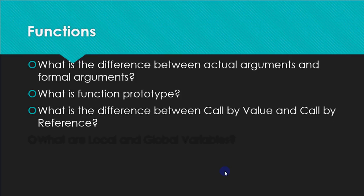A very important question is: what is the difference between call by value and call by reference? This is important for VIVA in year 12 and will remain important for your BTEC practicals. Call by value and call by reference depend on actual and formal arguments. In call by value, the values of actual arguments are copied to the formal arguments, so changes to formal arguments are not reflected back in actual arguments. In call by reference, we create references using reference variables, so no new memory is allocated and whatever change we make is reflected back.